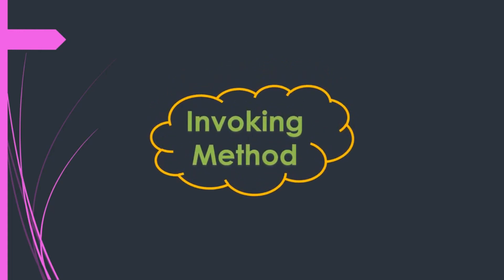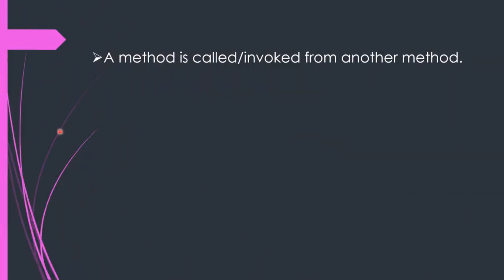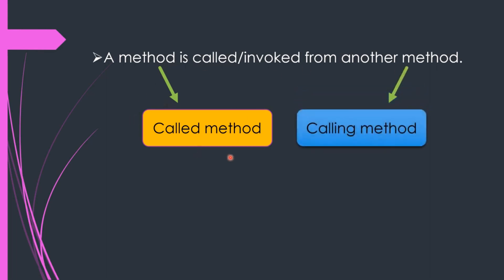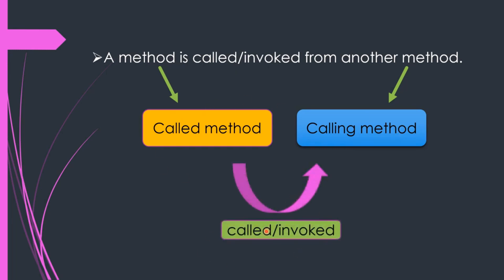A method is called or invoked from another method. The method which is called is known as the called method, and the method which is calling it is known as the calling method. Basically, the called method is invoked from the calling method.